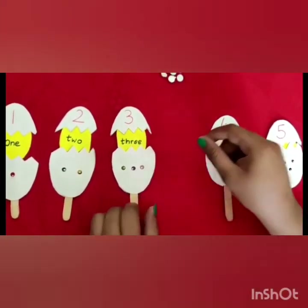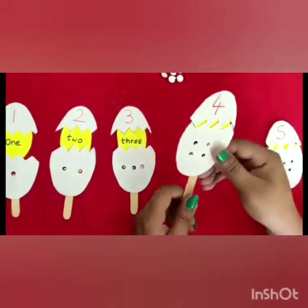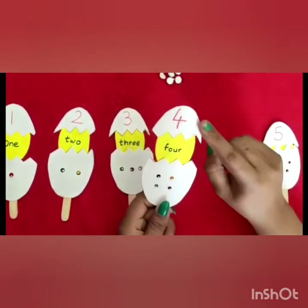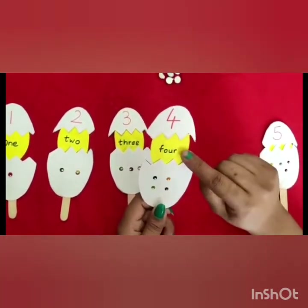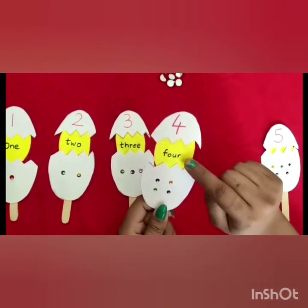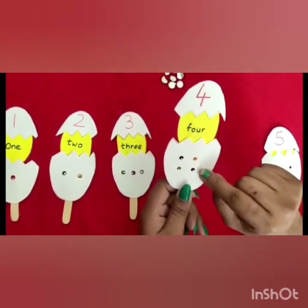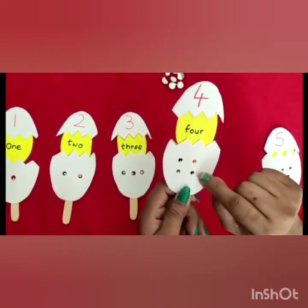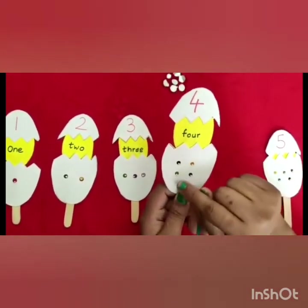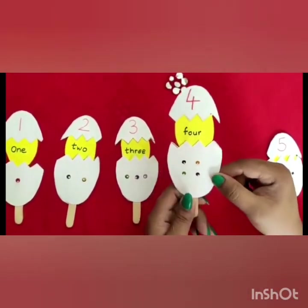Now, the next number is 4. So, number 4 and the number name — F, O, U, R — 4. And you can see the bendis here. We will count the bendis: 1, 2, 3 and 4. Very good.